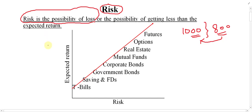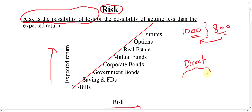In this graph I have shown the relationship between risk and return. On the vertical axis is expected return and on the horizontal axis is risk. There is a direct relationship between risk and return. Direct relationship means if risk is more, return is also more for a particular investment. As much as the chance of risk is more, the chance of profit is also more.